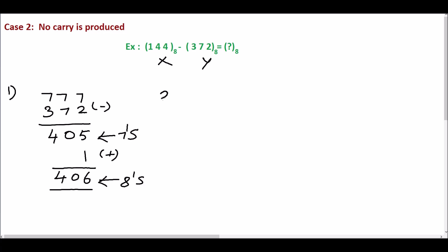In step 2, add x and 8th complement of y, which is 4, 0, 6. 4 plus 6 is 10. 10 is not an octal number. So we will convert this into octal. Quotient is 1. The remainder is 2. So 1, 2 is the equivalent octal. In this, 2 is the sum and 1 is the carry.